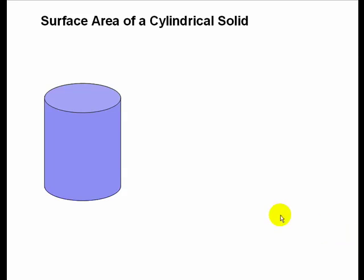I want you to understand how exactly we find the formula for the surface area of a cylindrical solid. Here we see a cylinder, and what we're going to do is separate this cylinder into three parts, three places where we have a surface area.